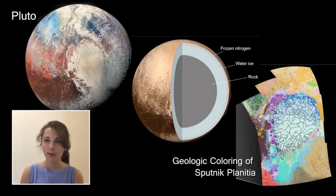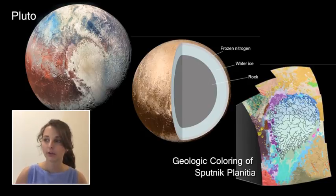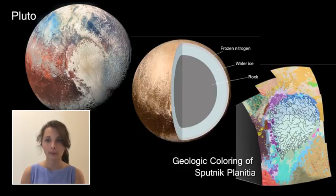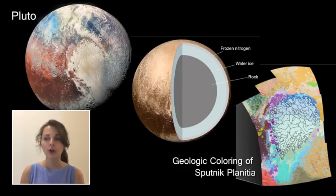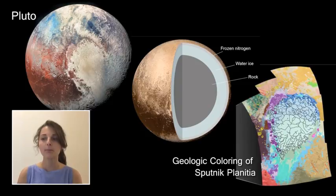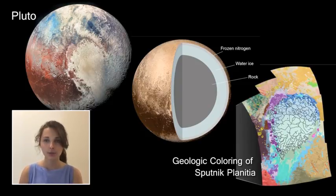Pluto's surface is composed primarily of nitrogen ice, and it has a number of geologic processes that have either currently or historically shaped its surface, including potentially tectonics, cryovolcanism, and mass wasting. Pluto's internal structure is not well understood but may contain liquid water and is responsible for the heating of its surface. There is a complex relationship between Pluto's atmosphere and its surface, which sublimates at the interface. Pluto is defined by many notable geologic features including the Sputnik Planitia and the heart-shaped Tombaugh region.